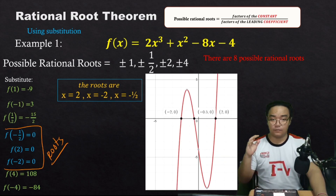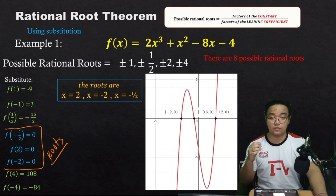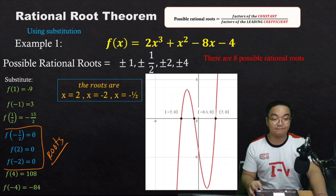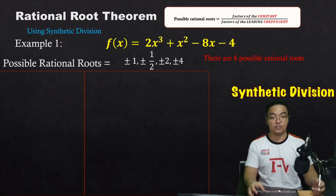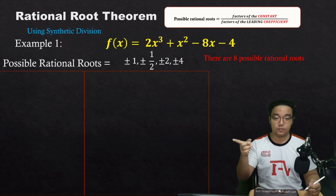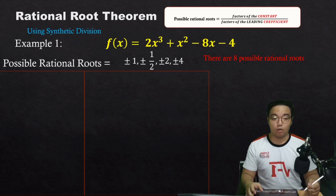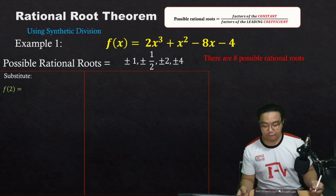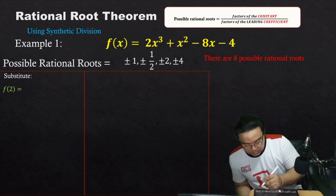Now, what if there are many possible rational roots? Do we need to substitute all of them? The answer is no — there's a more efficient method. We can use synthetic division. Let's solve the same example using synthetic division. We already know the eight possible rational roots: ±1, ±1/2, ±2, and ±4. We just need to choose one that makes the polynomial equal to zero.